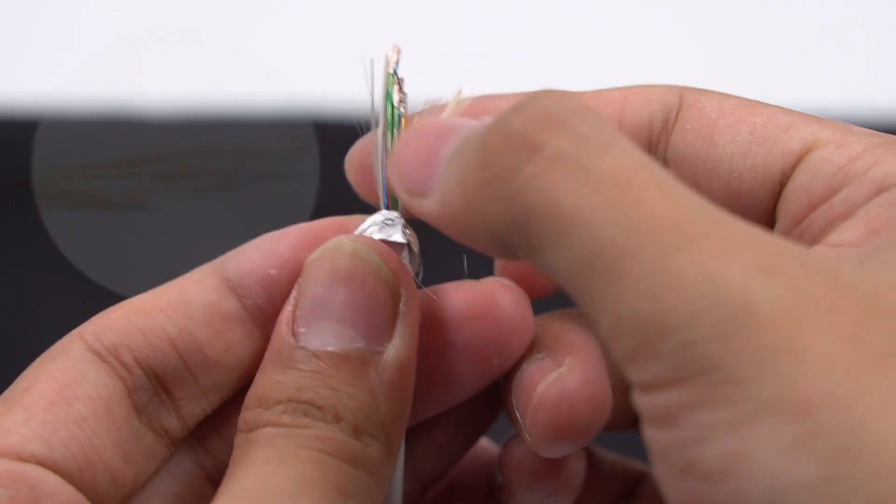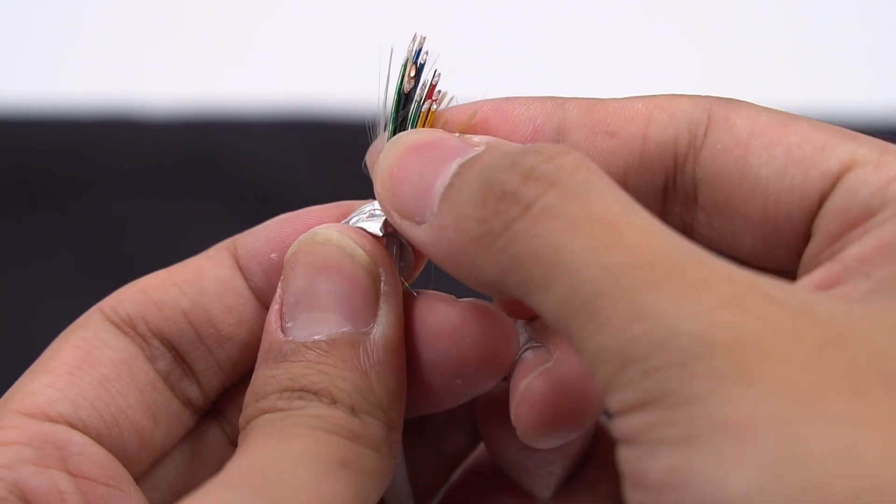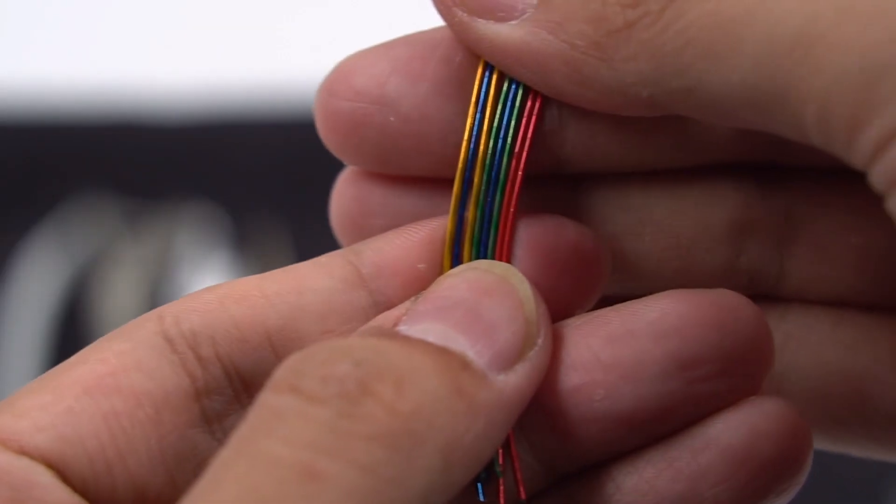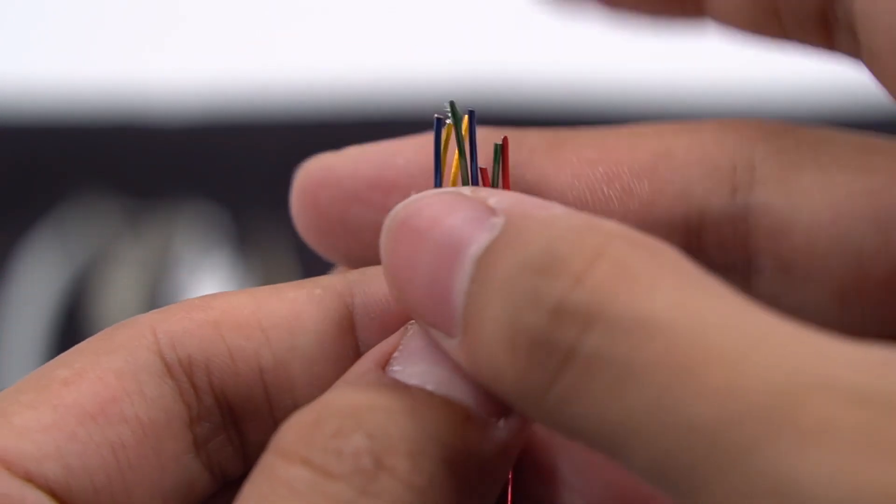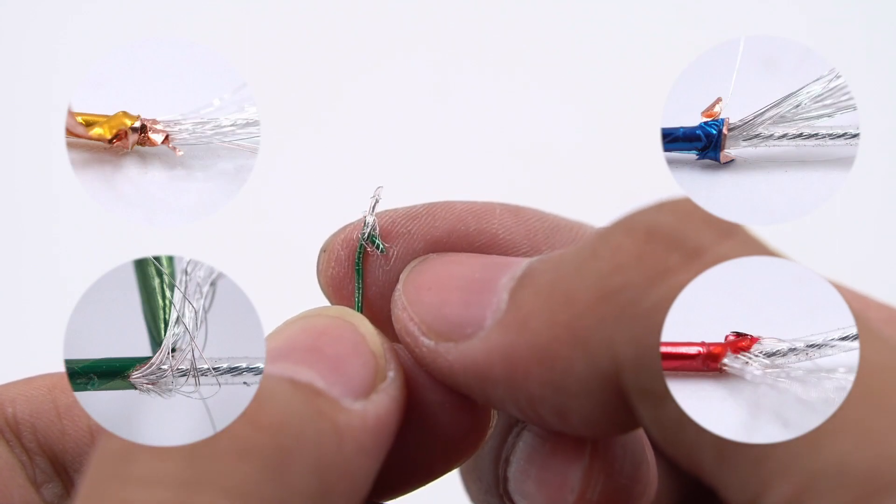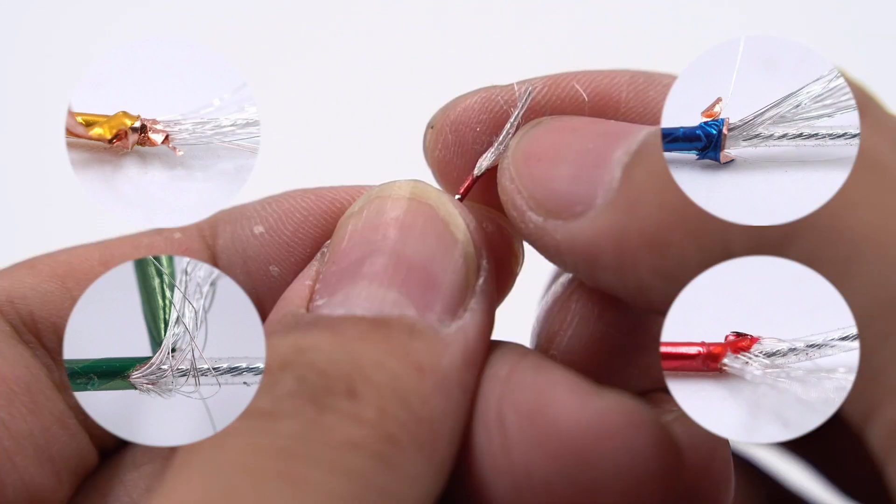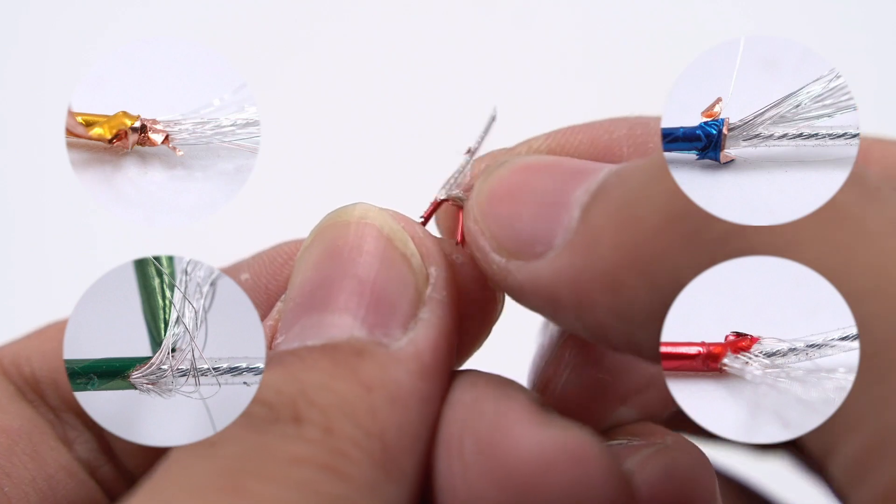Finally, let's take a look at these different cores. Actually, there is a layer of copper foil outside of these thick-colored cores. There is a metal shield layer composed of tinned copper cores under the copper foil. A thin core for transmission is in the innermost, and there is a layer of transparent plastic wrapped on the outside.